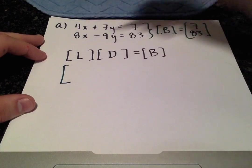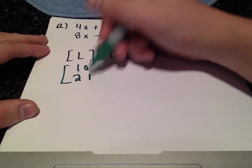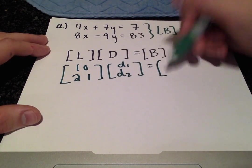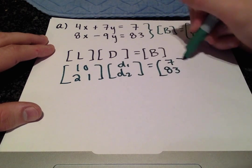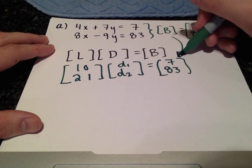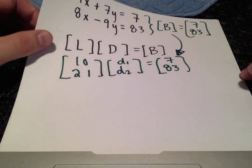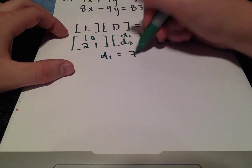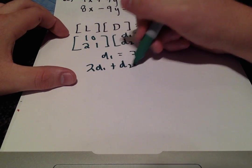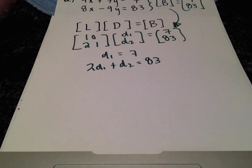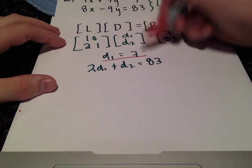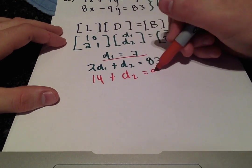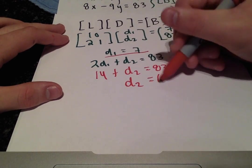We get 1, 0, 2, 1, D1, D2 equals the B vector above, 7, 83. Multiplying this out, we have D1 equals 7, 2D1 plus D2 is equal to 83. So we have right away D1 is equal to 7. Plugging that in, we get 14 plus D2 is equal to 83, or D2 is equal to 69.